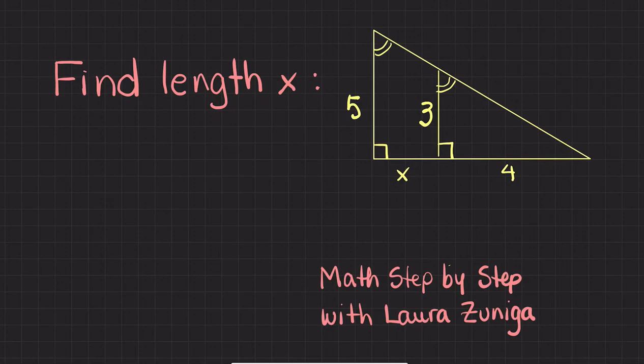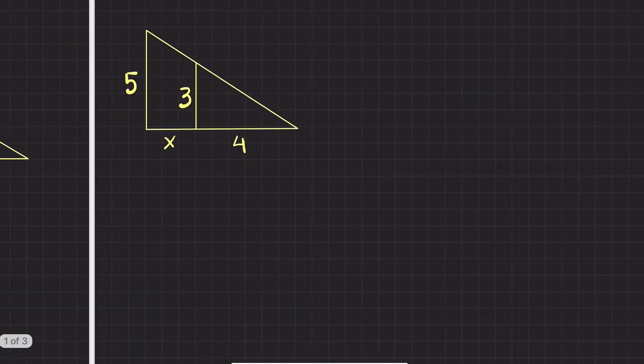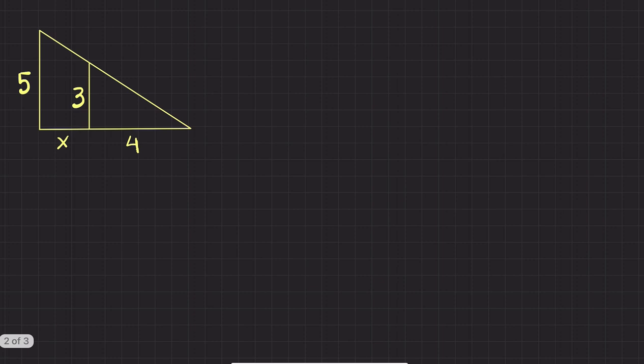We are going to solve this problem about similar figures using proportions. We need to find the length of X, and we have two similar triangles. I'm going to draw them separately so everyone can see more clearly.